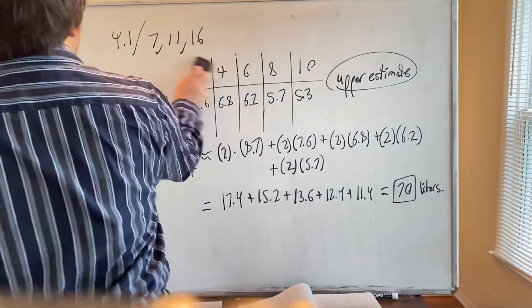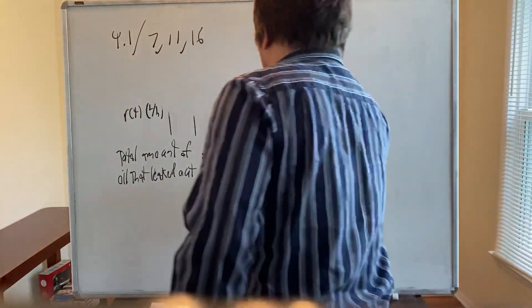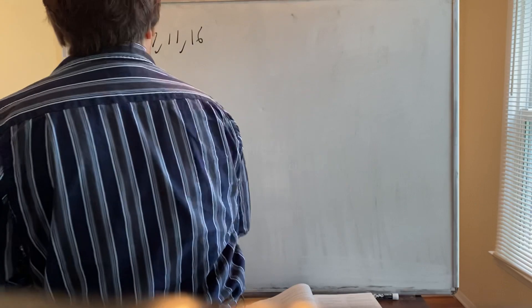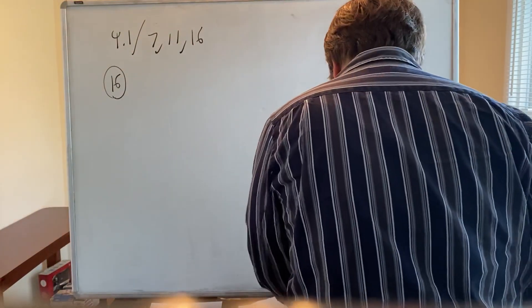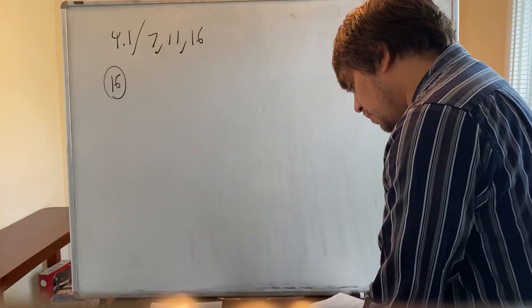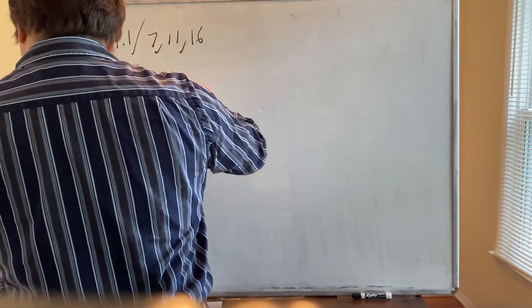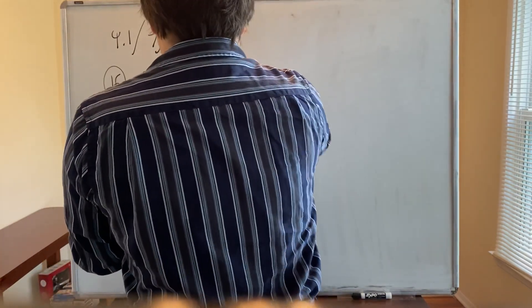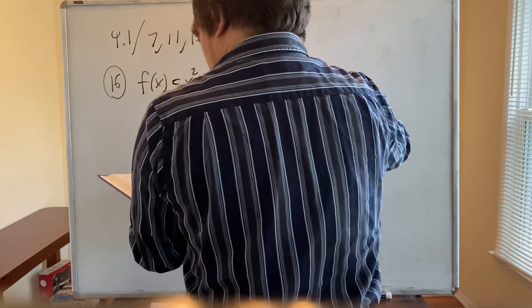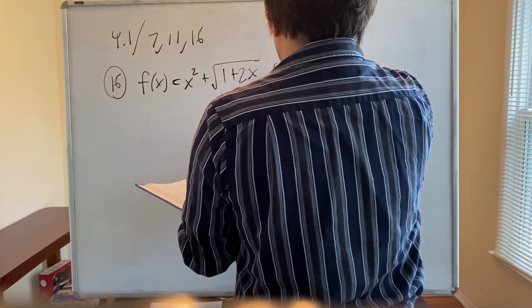Next is number 16. It says: use Definition 2 to find an expression for the area under the graph of f as a limit — do not evaluate the limit. Here f(x) = x² + √(1 + 2x) on the interval 4 ≤ x ≤ 7.